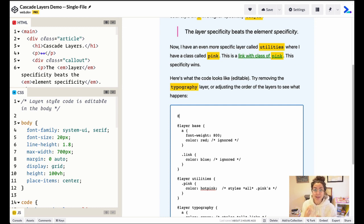So if I wanted base to be on top of everything, I could set up at layer, and then I could write maybe typography first, and then maybe utilities, and then we want base.